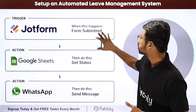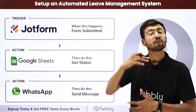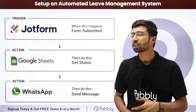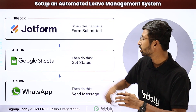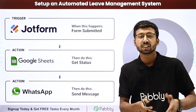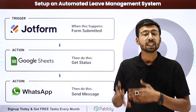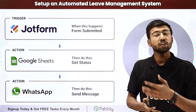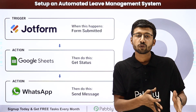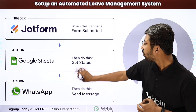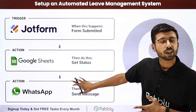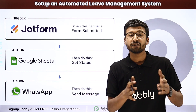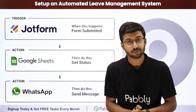The leave request submissions from JotForm are stored into a Google Sheet. In that Google Sheet, the HR or team managers can approve or reject leave requests. And on the basis of their decision — whether they approve or reject it — automatically a WhatsApp message, email, or SMS can be sent to the employees to notify them that their leave is approved or rejected.